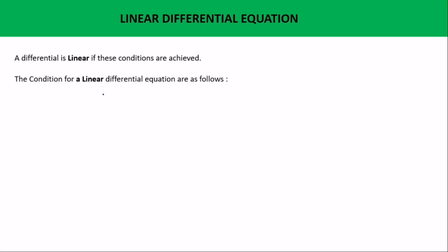Please don't forget these three conditions, because with them you'll be able to determine whether a differential equation is linear or not. The first condition is: the dependent variable and all its derivatives occur in only first degree. As in my previous video, we talked about the degree and the order. The degree of a differential equation is the exponent of the highest order derivative.